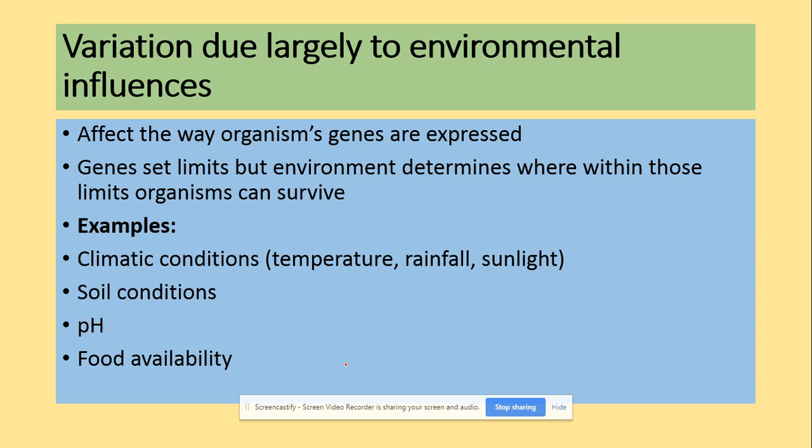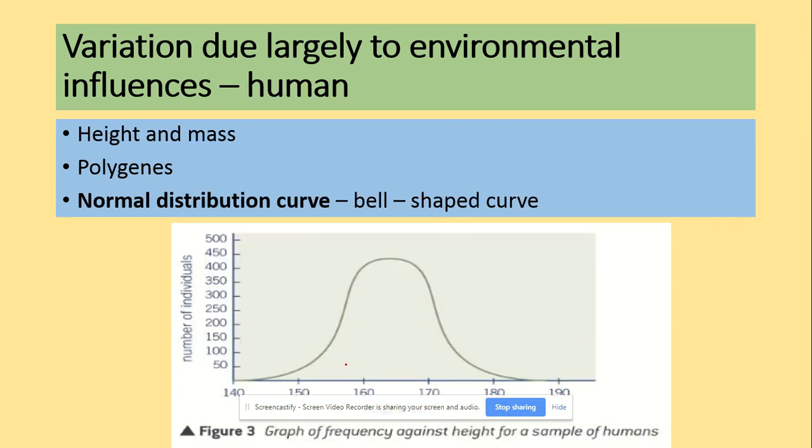Also the variation could be due to the environmental factors. That will affect the organisms' genes' expression. So genes set limits, but environment determines whether between those limits organisms can survive. The examples here that we will be looking at could be climate, could be soil, could be pH, could be food sources as well.